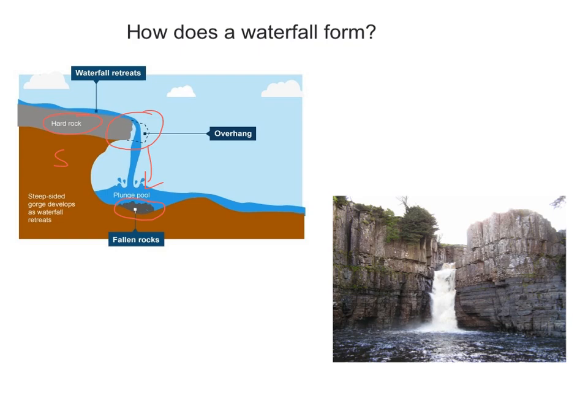And this classic photograph is of High Force waterfall along the River Tees, and here you can see the hard Whin Sill geology above the softer geology below.